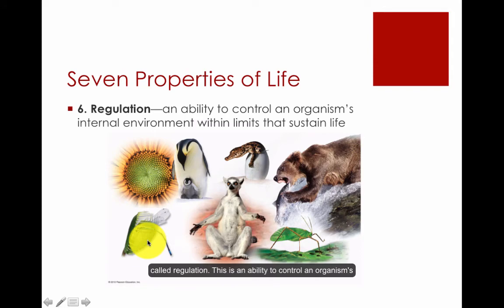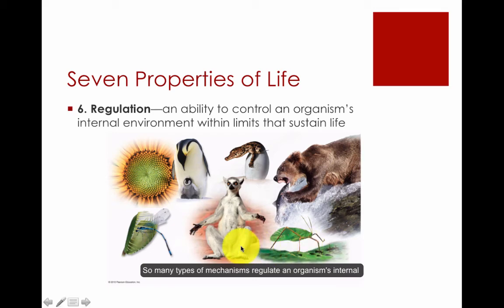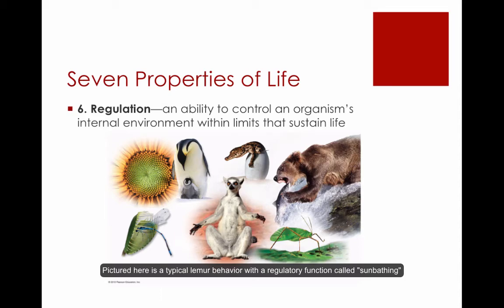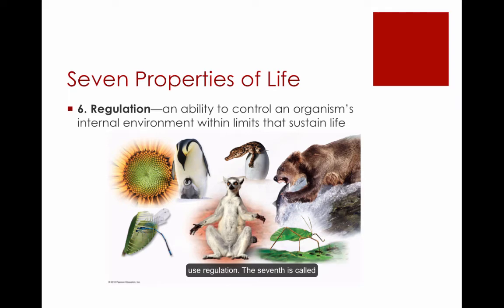The sixth property is called regulation — the ability to control an organism's internal environment within limits to sustain life. Many types of mechanisms regulate an organism's internal environment. Pictured here is a lemur sunbathing, a regulatory behavior that helps raise the animal's body temperature on cold mornings. Another example is sweating when you run — this is regulation.